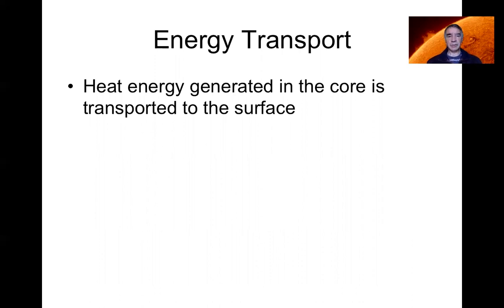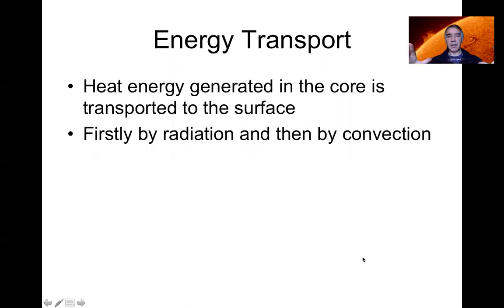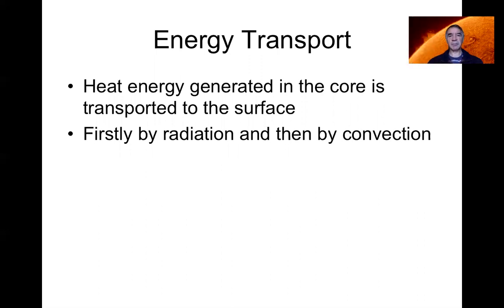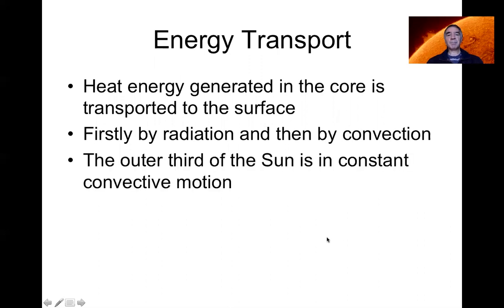In fact, both radiation and convection operate in the sun but at different points. As soon as the energy starts to leave the core, it is first transported by radiation — photons slowly working their way out, interacting with matter as they go, so it actually takes quite a long time. But when you get to the outer third of the sun, convection takes over completely, with constant convective motion and convection currents in that outer third.